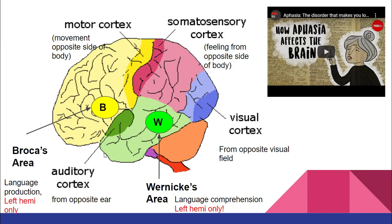Within those lobes you need to know how they break down further. The frontal lobe has the motor cortex — controlling conscious body movement — and Broca's area for language production. The hemispheres control the opposite side of the body. The parietal lobe has the somatosensory cortex for feeling on the opposite side. The occipital has the visual cortex, and the temporal lobe has the auditory cortex plus Wernicke's area for language comprehension.